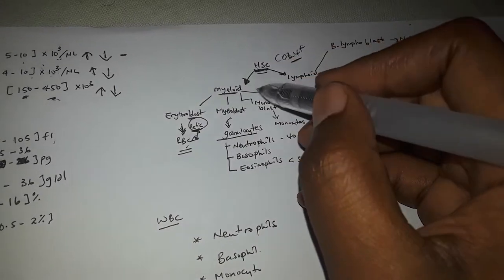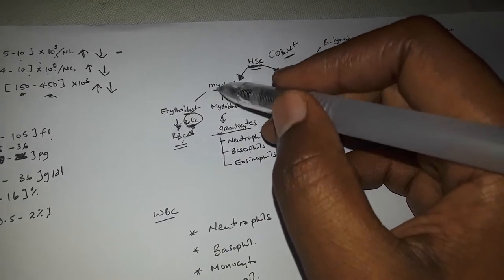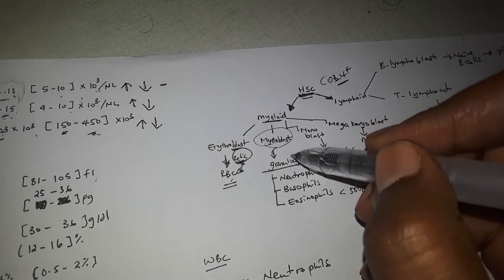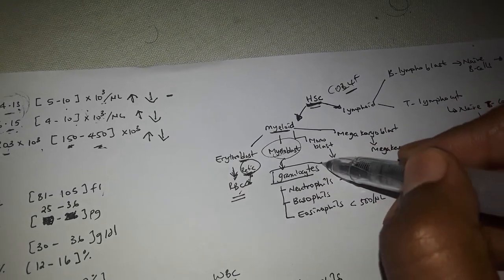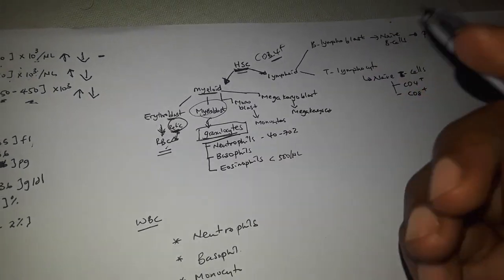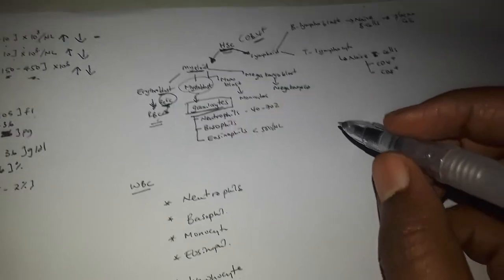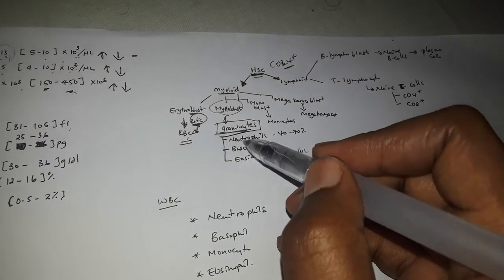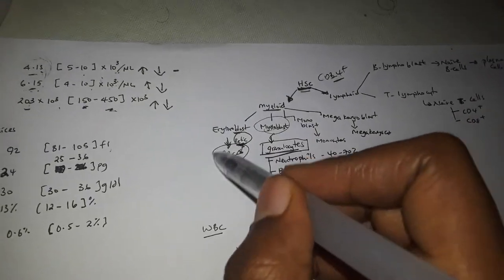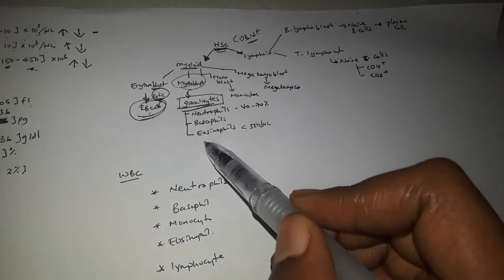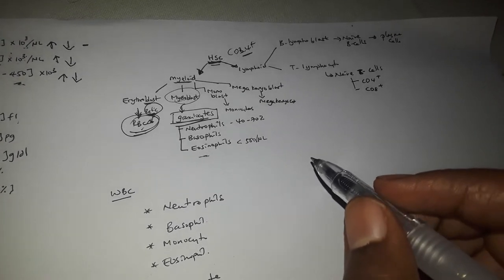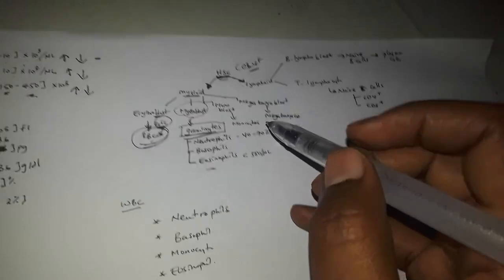If you look at myeloid stem cells further, you will see myeloblasts. Myeloblasts give rise to white blood cells, and the reticulocytes are forming the red blood cells along a separate pathway.